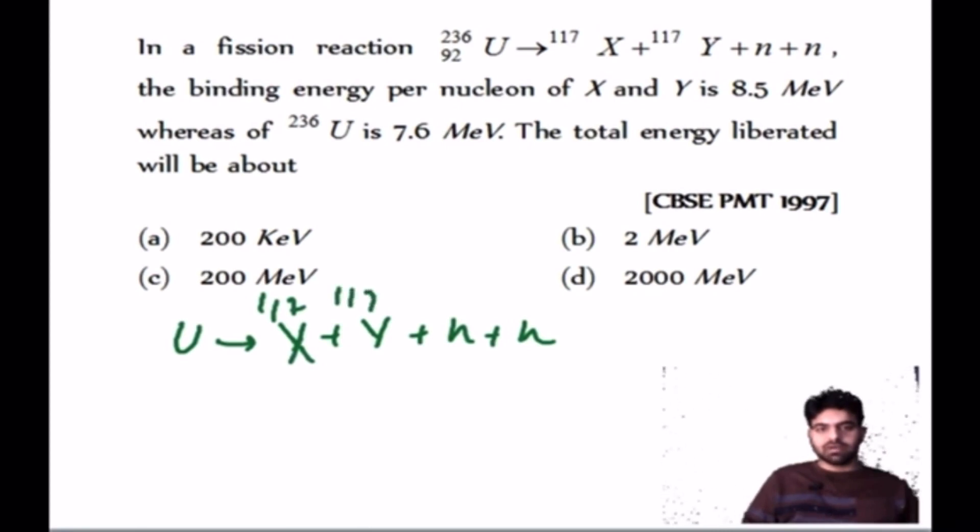Binding energy per nucleon of X and Y is 8.5 MeV each. Uranium's binding energy is 7.6 MeV. The question asks: what is energy released?